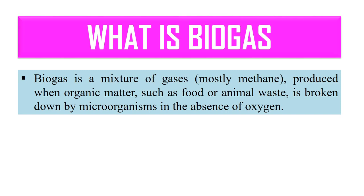Because it is produced from living beings, the gas produced by living things is known as biogas, and its maximum component is methane. Biogas consists mainly of methane at 60%, carbon dioxide at 40%, and some other gases like hydrogen are also present.